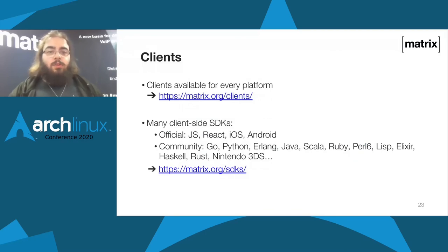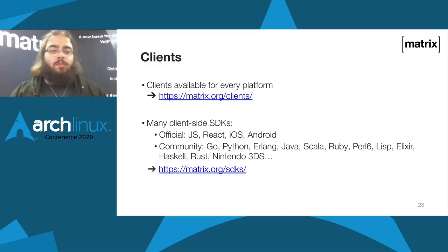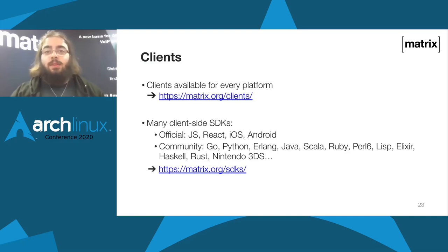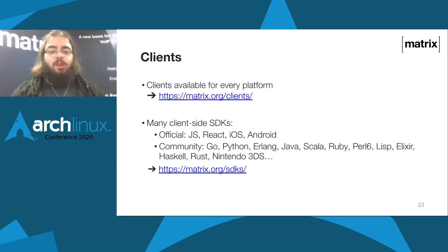If you want to build your own client, you can use one of the many SDKs. Officially, the Matrix.org Foundation maintains four: a JavaScript one, a React one, an iOS one, and an Android one. The community has built a whole lot of others for Go, Python, Java, Ruby, and Rust. There's even one for the Nintendo 3DS — one of our community members built a Matrix client for the Nintendo 3DS which works pretty well, and made an SDK out of it. You can find them through the links I'll share via the conference's website.